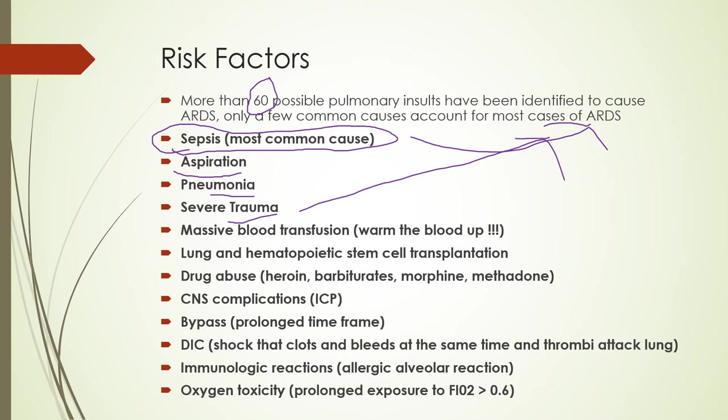If a patient has a massive blood transfusion with cold blood, that's a risk for ARDS. Cold things expand — ice in a tray expands — so cold blood means larger red blood cells that are more likely to tear through the thin capillary membrane in your lungs, which can lead to ARDS. That's why we want to make sure we warm blood before giving it to them.